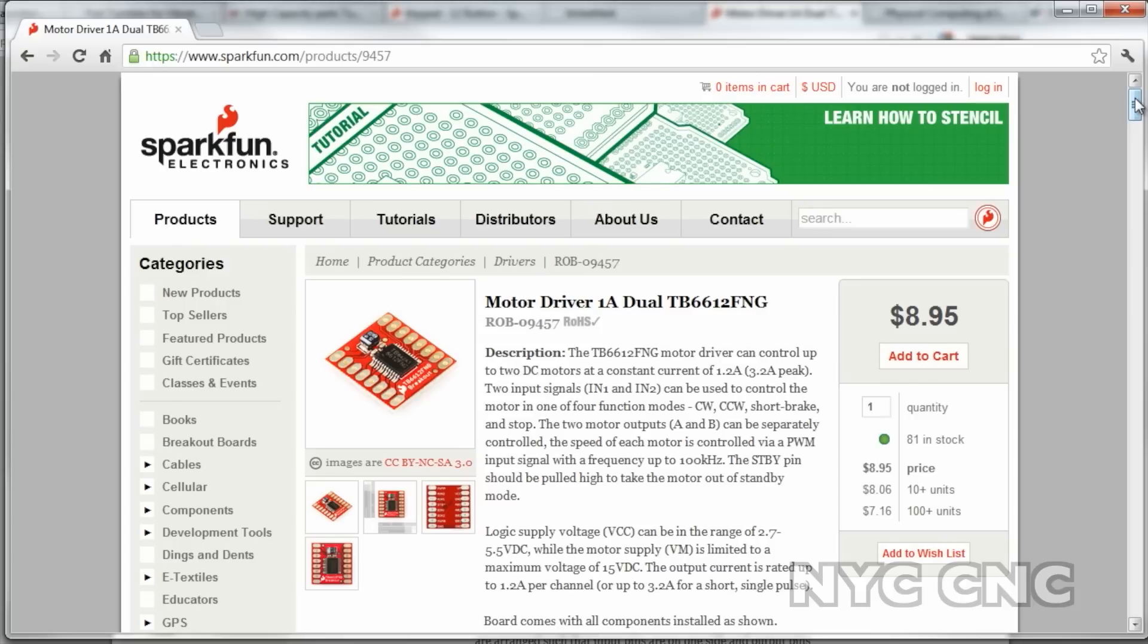All right we're going to end with my favorite. This is a SparkFun motor driver based on this chip right here. It can drive two DC motors at a constant current of a little over an amp. It can peak out at 3.2 amps and it's great. It's just a dual H-bridge chip. It's similar to the one we just looked at but it's a great package and I really like it. Let's take a look.